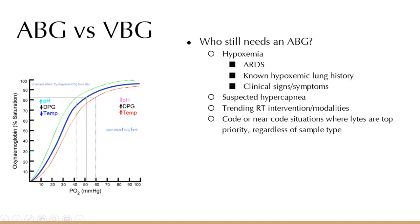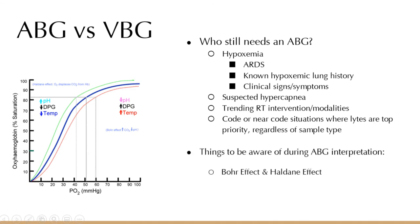Just order the ABG as quickly as you can and we'll get there. We can run a VBG off blood someone else drew — just make sure it's ordered correctly, but in an emergency situation if it's ordered wrong, we'll order it correctly for you. Up until recently VBG with electrolytes wasn't built out in our system, but now we can do VBGs with electrolytes and lactate.